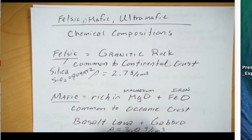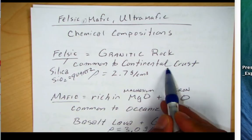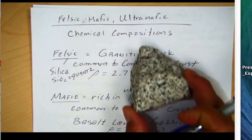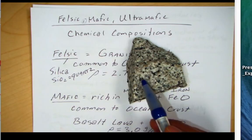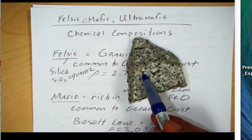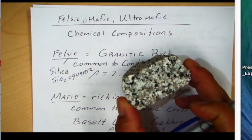Felsic rocks are common to the continental crust, and they're typically this granitic rock. Granite has a combination of mostly light-colored silicate minerals like feldspar and the gray mineral quartz, with a few darker minerals like biotite mica and some hornblende. Granite is common to the continental crust.